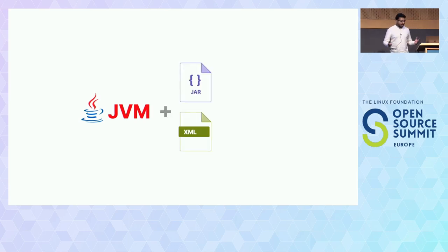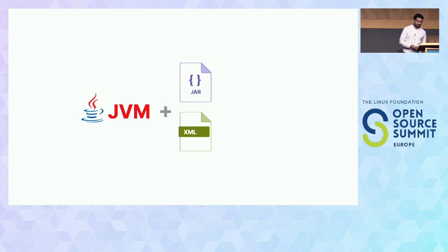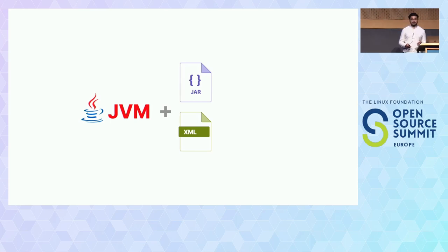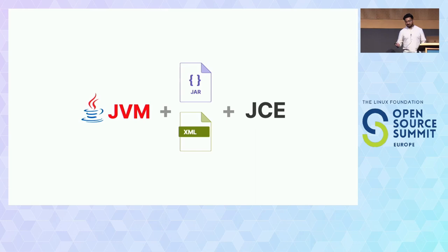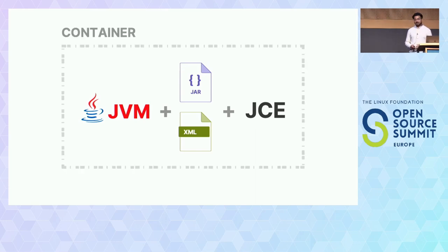What you have is a runtime of some sort — in this case, a Java Virtual Machine, but it could be any runtime like Python. You get all the configuration files, all the artifacts and assets alongside the application, and stick them all in together. You put in any dependencies — for example, a Java cryptographic extension — and stick it in what we call a container, maybe a Linux container. This is how we end up with a container.